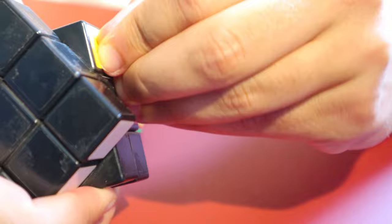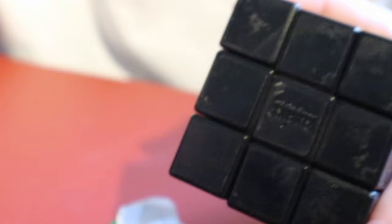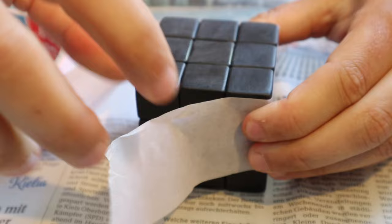I have to start by taking off all the stickers because I don't want to paint on top of them. Now I have to sand all the sides so they're easier to paint on. And now let's start painting the sides.